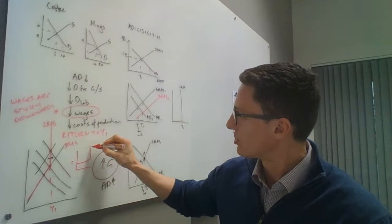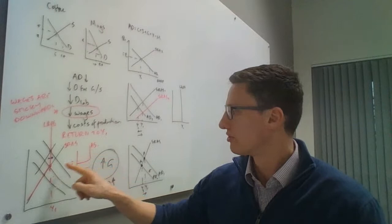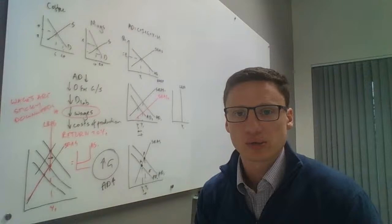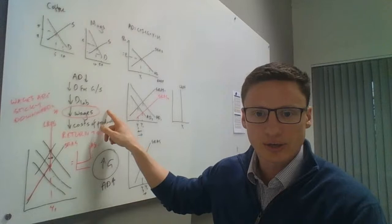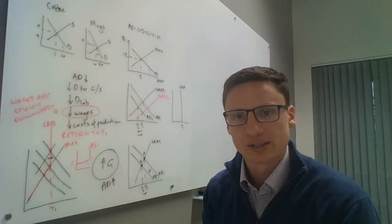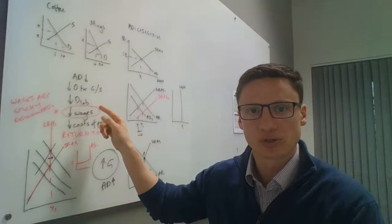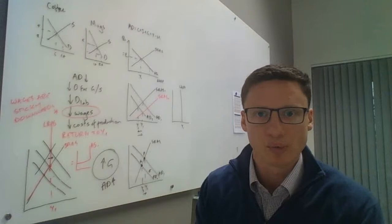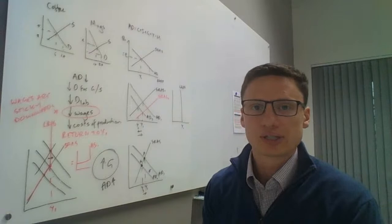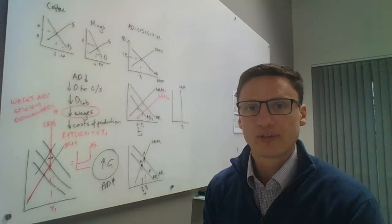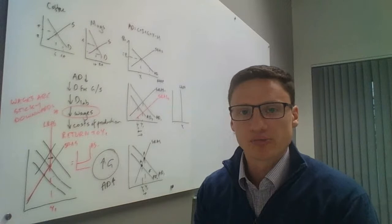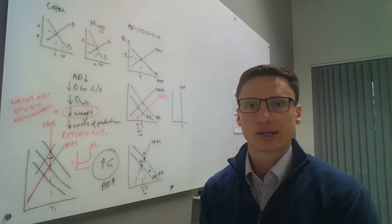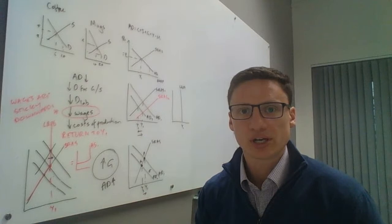That's why you get the Keynesian-shaped AS curve — and this is the ideological battle between Keynesian and Classical economists that has raged for a hundred years, from the 1930s to now. For a Classical economist looking at 2020, they'd say the reason you're not self-stabilizing is because of minimum wages, trade unions, and long-term contracts. What you need to do is abolish or reduce the minimum wage, reduce trade union power, and make it easier for businesses to negotiate wages downwards — then costs of production fall faster and we self-stabilize.